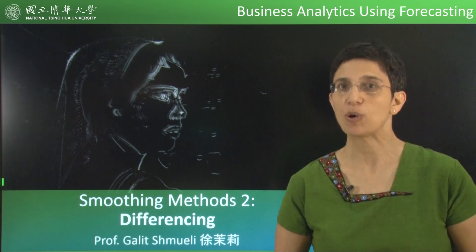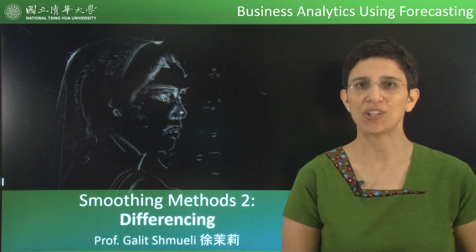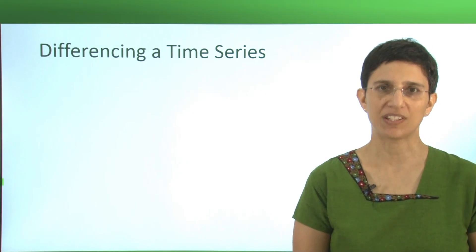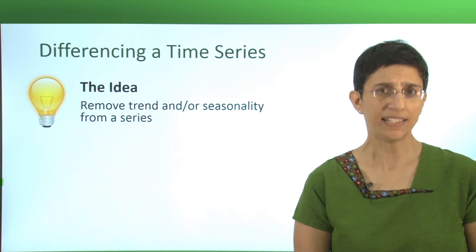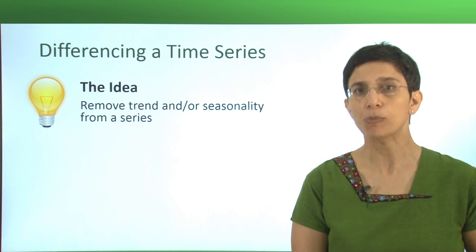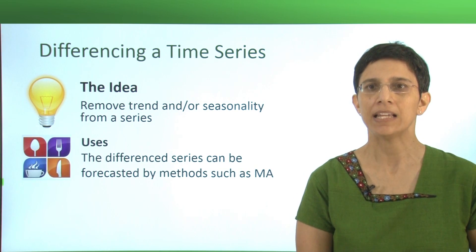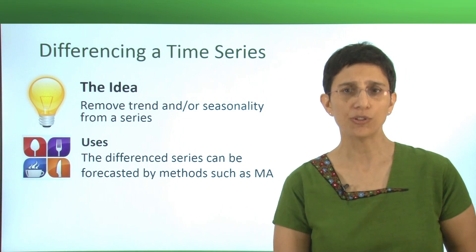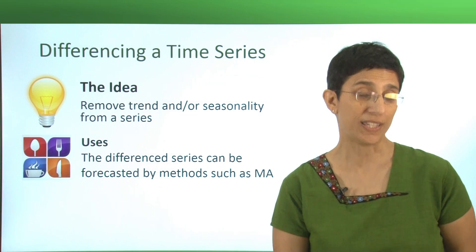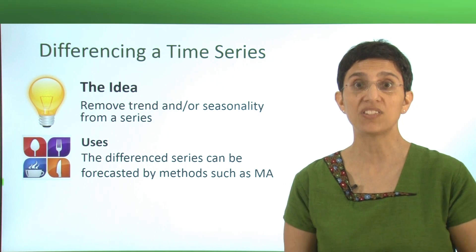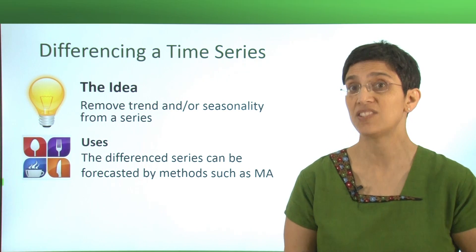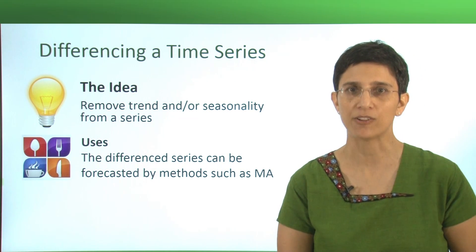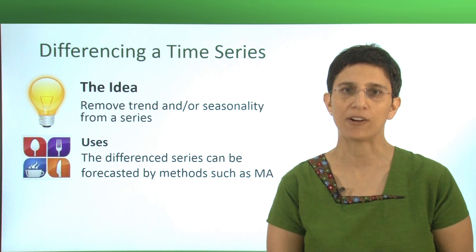Whereas in the moving average, we were adding values up, here we're actually going to look at differences between values. The idea is very simple: we're going to try to remove trend and/or seasonality by taking the differences between values in the series. This is going to be useful if we want to use a moving average to forecast a series that has a trend or seasonality, since the moving average can't really capture those patterns. Differencing will help us remove these patterns beforehand.